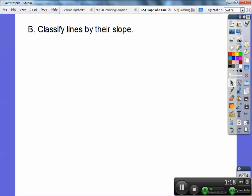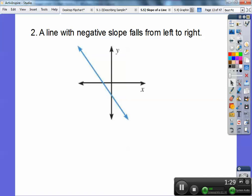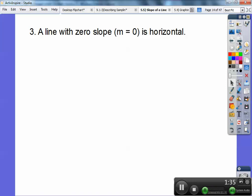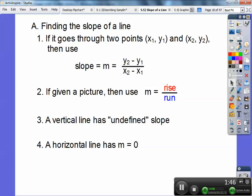Here are some pictures. Classify lines by their slope. A line with positive slope rises from left to right. A line with negative slope falls down from left to right. A line with slope zero is horizontal, and a line that's undefined is vertical.